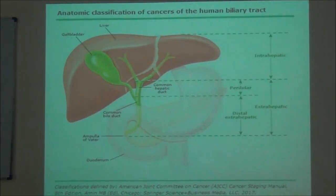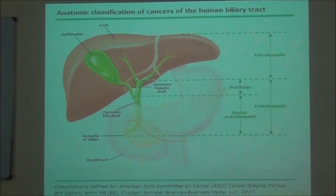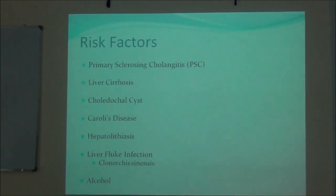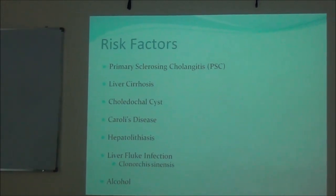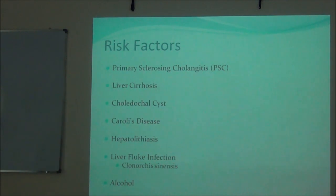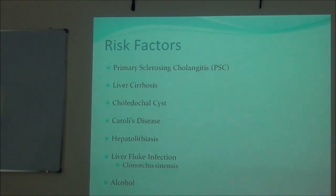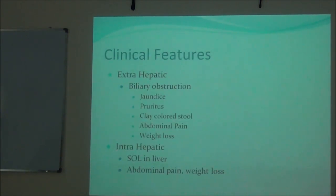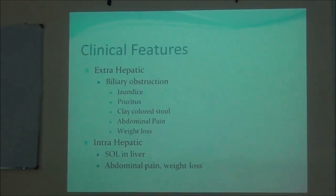We categorize these tumors by location because treatment varies according to the location of the tumor. Risk factors for cholangiocarcinoma include primary sclerosing cholangitis, liver cirrhosis, choledochal cysts, Caroli's disease (a type of choledochal cyst where numerous cysts develop inside the biliary system in the hepatic parenchyma), hepatolithiasis, and liver fluke infection such as Clonorchis sinensis. Alcohol is also a risk factor.